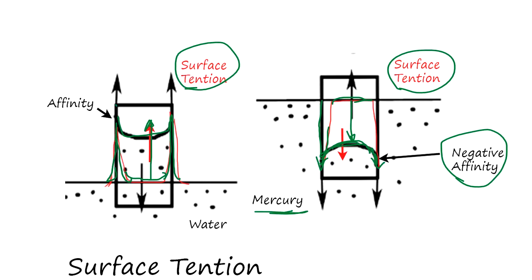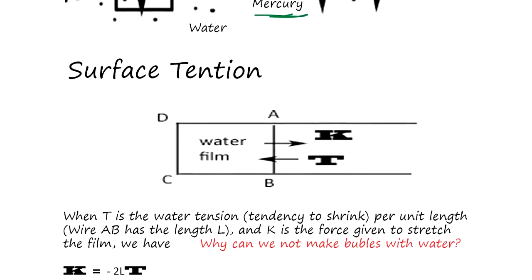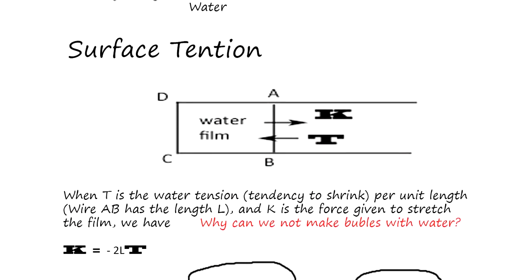So we know we have two things: affinity and surface tension to see the capillary effect. The water surface tension - surface tension is we can easily measure. Say we have a water film here and this wire is movable.